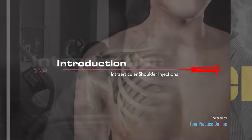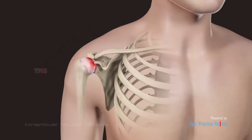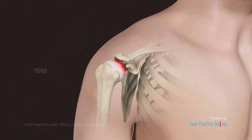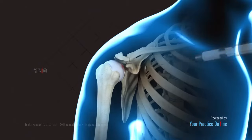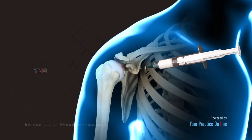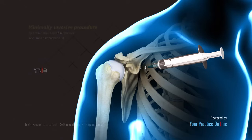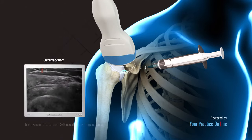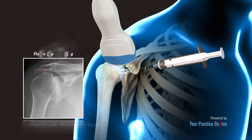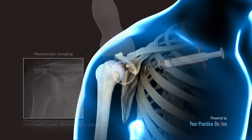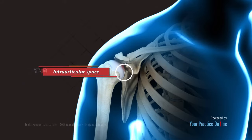The shoulder is prone to different kinds of injuries and inflammatory conditions. An intra-articular shoulder injection is a minimally invasive procedure to treat pain and improve shoulder movement. It may be performed with the help of ultrasound or fluoroscopic imaging, which allows your physician to precisely target the intra-articular space.